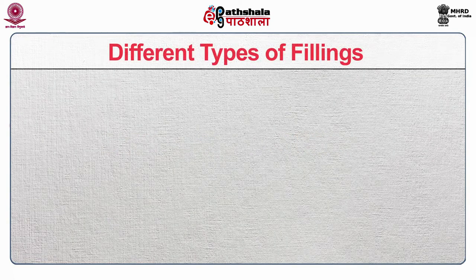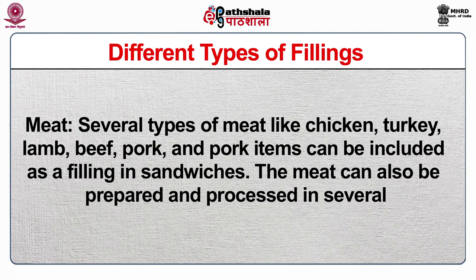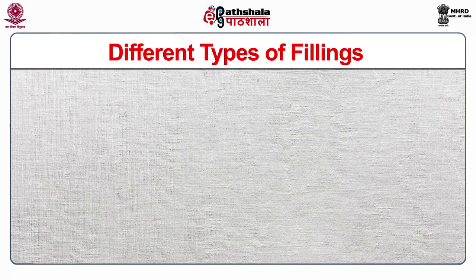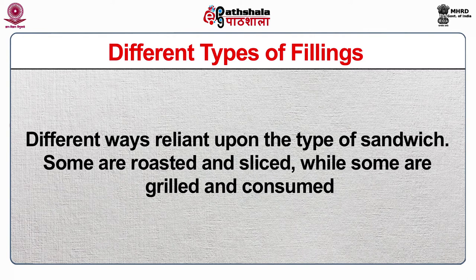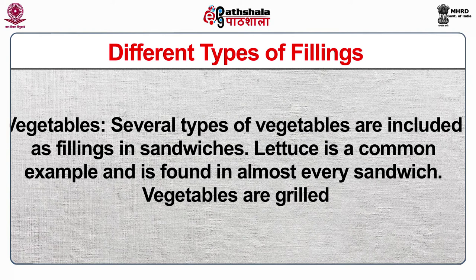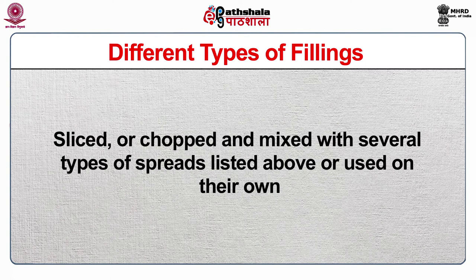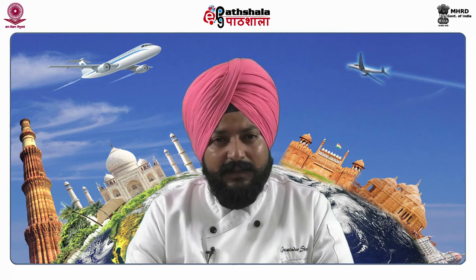Different types of filling include: Meat — chicken, turkey, lamb, beef, pork can be roasted and sliced or grilled. Vegetables — lettuce is a common example found in almost every sandwich; vegetables are grilled, sliced or chopped and mixed with spreads. Seafood — it can be cooked, canned, cured or smoked; seafood sandwiches are traditionally made using brown bread, and can be combined with other ingredients. Canned tuna and boiled egg paired with mayonnaise is a popular seafood filling.